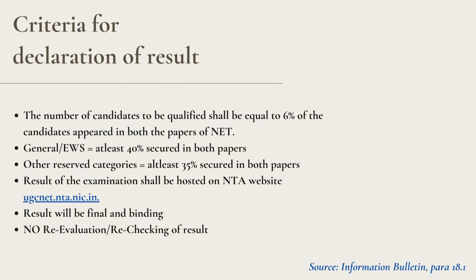Now let's see the criteria for result declaration. The first and foremost point is regarding the percentage of candidates to be qualified in this exam. There has been widespread hearsay that the total number of candidates to be qualified is 12%. But according to the information bulletin published by NTA, the number of candidates to be qualified will be 6% of the candidates who appeared in both papers of NET — it's not 12%, it is 6%. Second, if a candidate belongs to the General or EWS category, the minimum percentage they should secure is 40% to fall under the consideration zone for NET. For other reserved categories, the minimum marks for the consideration zone is 35%.